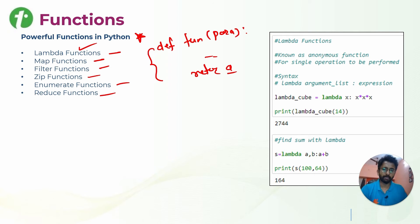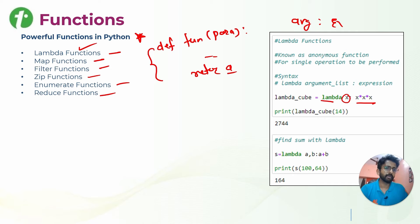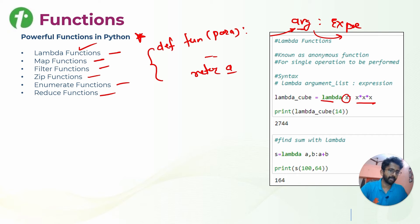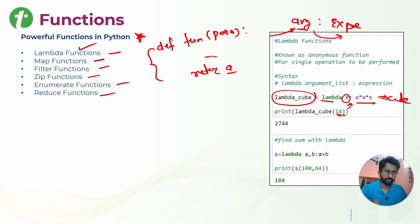The syntax of a lambda function is: lambda, then the argument, then a colon, then the expression. Whatever parameters you pass will come into the arguments and be evaluated by the expression. For example, I have created lambda x: x*x*x, which is a cube function. I am passing 14 to this lambda, so 14 will be given to x.